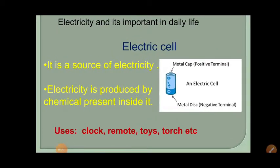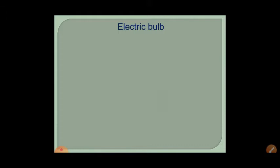When we connect a cell to a circuit, it supplies electricity. For example, in a remote it switches things on, and in a torch the bulb glows. To get light from electricity we use an electric bulb or tube light. Nowadays we have CFL bulbs and LED bulbs, but the traditional electric bulb has a distinctive shape.